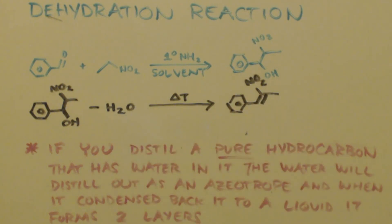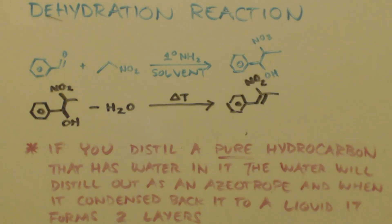If you want to dehydrate it you have to heat it up a little bit. You will have an equilibrium between all these products and agents, and it will only make so much. If you want to make more you've got to take the water out. You can do that with a Dean-Stark apparatus.